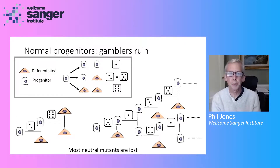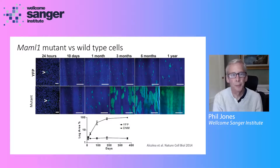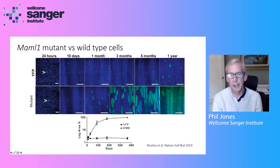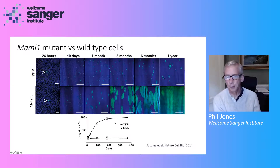What happens if we get a mutation that rewrites the rules of the game? This is illustrated with a mutant of a gene called MAML1 that regulates the Notch signalling pathway. Comparing the neutral label with MAML1 mutant labelling, the pattern changes dramatically — huge clones appear, getting progressively larger till they fuse, and by a year the entire tissue has been replaced by mutant cells. Despite this, and very strikingly, the mice remain completely well, and as in humans with extensive Notch mutations, there's no gross difference in tissue structure and no tumours form.